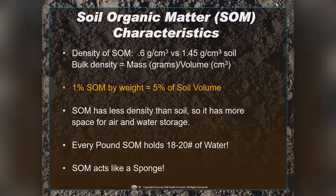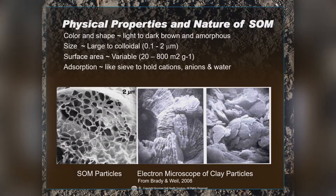Regarding soil organic matter characteristics: the soil organic matter is very light, kind of like a sponge. One percent soil organic matter by weight takes up a lot of surface area — that's 5% of your soil volume. Soil organic matter has less density than the soil, so there's more space for air and water storage. Every pound of soil organic matter can hold anywhere from about 18 to 20 pounds of water.